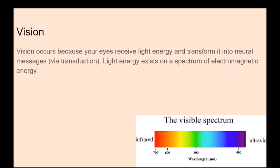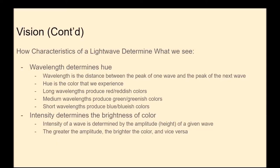Next, we get into vision. Vision occurs because your eyes receive light energy and transform it into neural messages via transduction. Light energy exists on a spectrum of electromagnetic energy. Characteristics of a light wave determine what we see: the wavelength determines hue, which is the color we experience. Long wavelengths produce red or reddish colors, medium wavelengths produce green, and short wavelengths produce blue. Intensity — determined by the amplitude or height of the wave — determines brightness: greater amplitude means brighter color, lower amplitude means duller color.